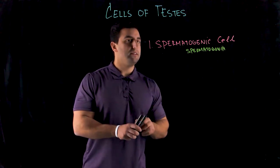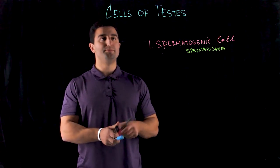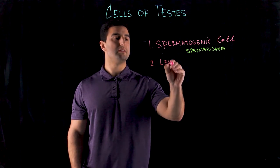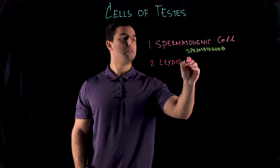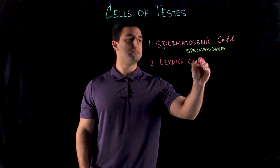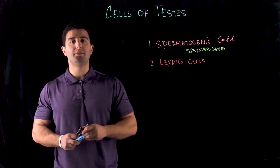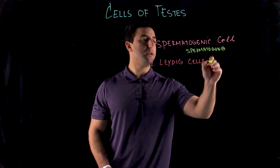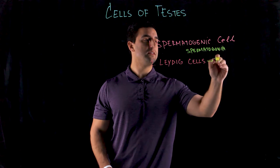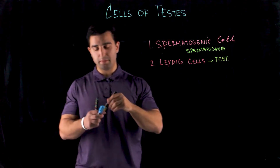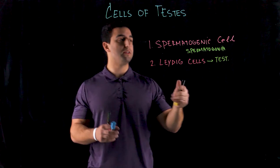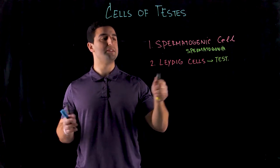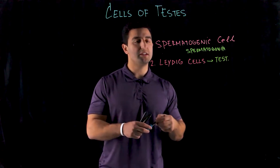The second cell type is the Leydig cells. Leydig cells are responsible for the production of testosterone, which gives the male secondary and primary sex characteristics. Leydig cells are the cell type specifically in charge of the secretion of testosterone.